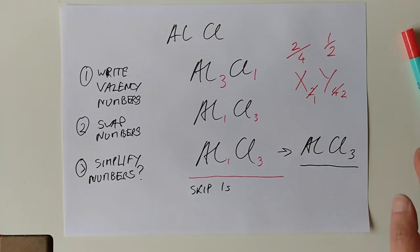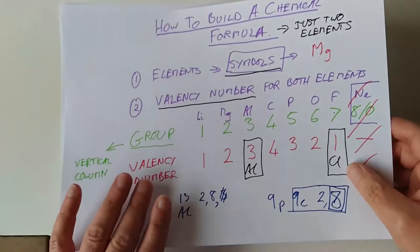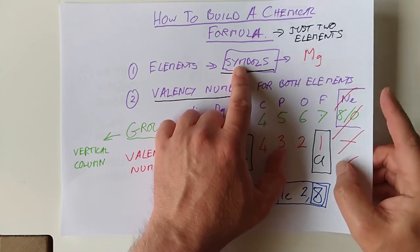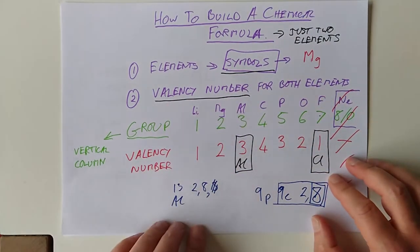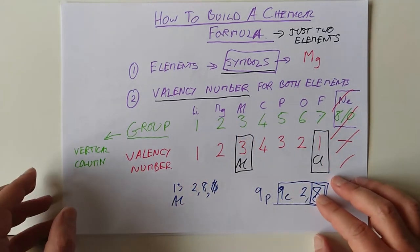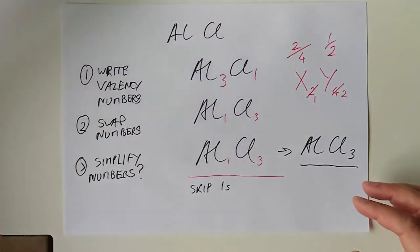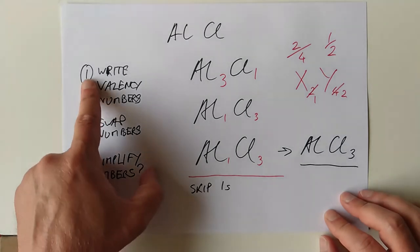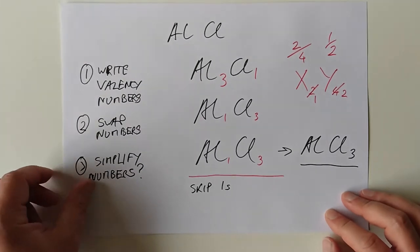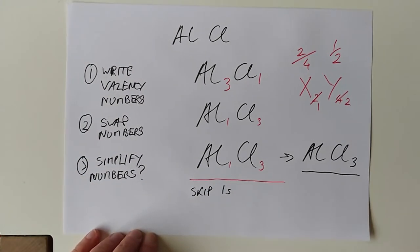That's pretty much the task for today. I would like you to be able to write some formulas for simple two element compounds. And that's the steps. You go and find the symbols, you need to find the valency number for each of your two elements. Where do you find the valency number? You find it according to the group that it's in. And what do you do with these valency numbers once you've got them? Well you write them down, you swap them over, and then you simplify it if you can. Is that as complex as it gets? Not quite.